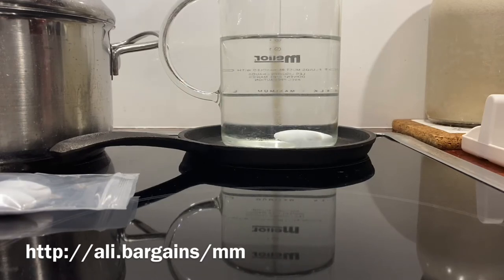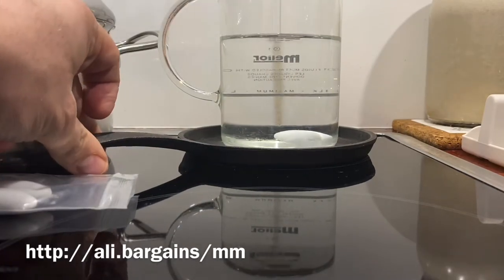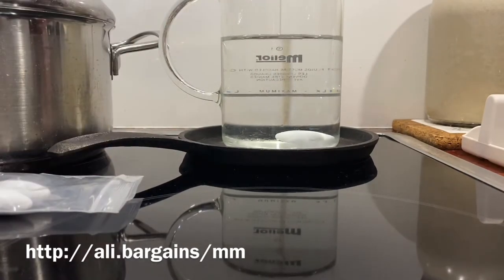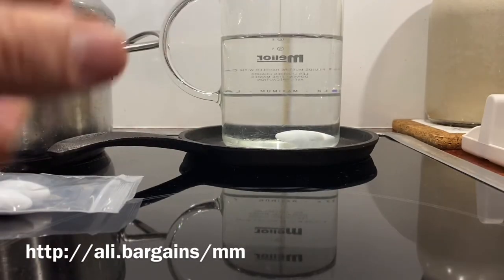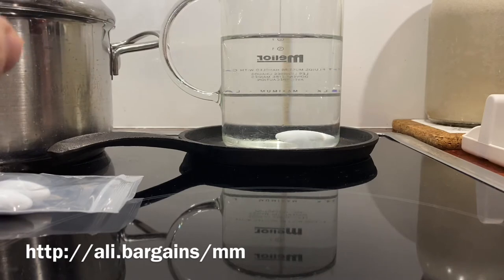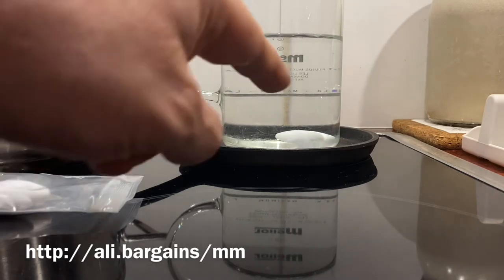So I guess the magnet in there is stuck to this cast-iron pan, but without this we won't have any heating because the glass itself of course will not interact with the induction, maybe the magnet itself.